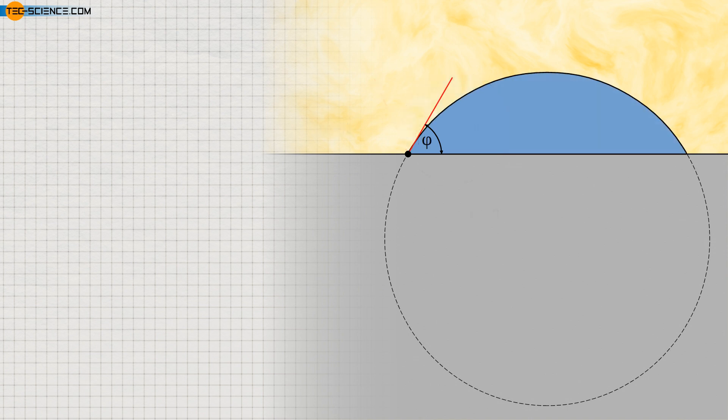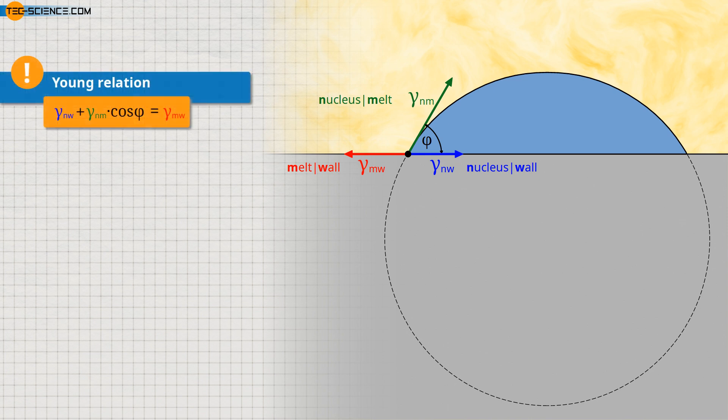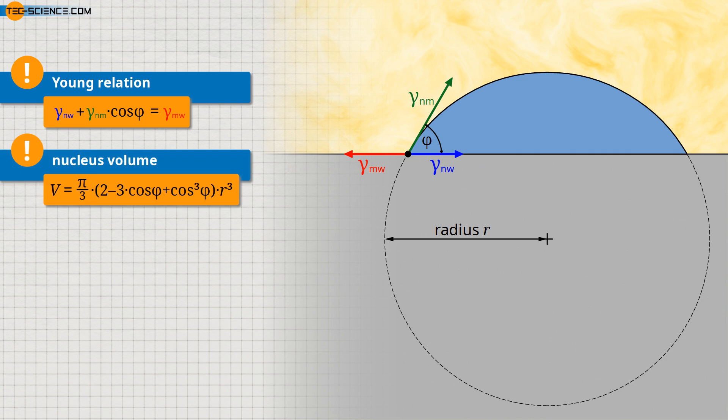Decisive for the contact angle are the surface tensions between the interfaces: nucleus-melt, nucleus-wall, and melt-wall. From an equilibrium analysis, the given relationship — also known as Young's relation — is obtained. The contact angle can also be used to determine the volume of the nucleus for a given radius. This is the volume of a spherical cap, calculated using the given formula, whose derivation will not be discussed further here.